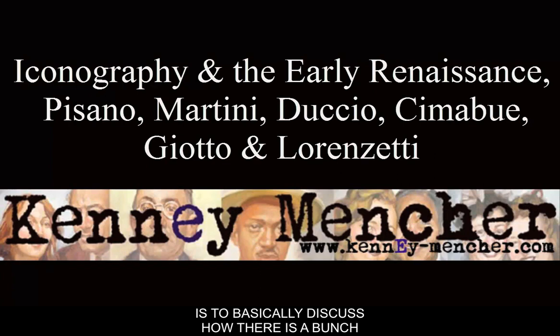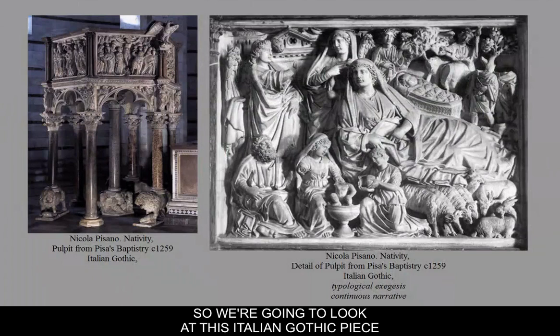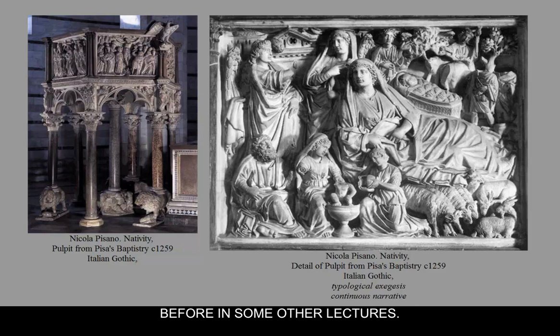My thesis for this lecture is to discuss how there's a bunch of iconography or symbols that seem to be used and reused over and over again, and the concept of schema and correction comes into play. I also want to discuss how these schemas or icons change as they're being reused. We're going to look at this Italian Gothic piece by Nicola Pisano, which we've discussed before, but let's talk about it and discuss some terms first.